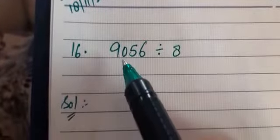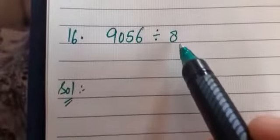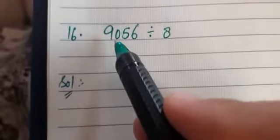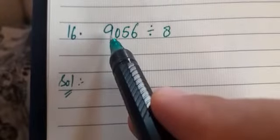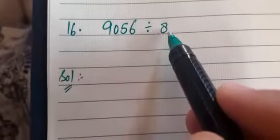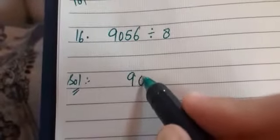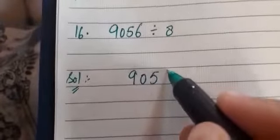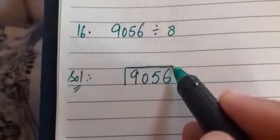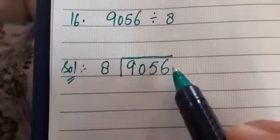Now children, as we did division of two digit and three digit numbers, in the same way we will do division of four digit numbers. So the first part of four digit numbers is 9056, which is our dividend, and it has to be divided by 8, which is the divisor. So let's begin its division: 9056 divided by 8.